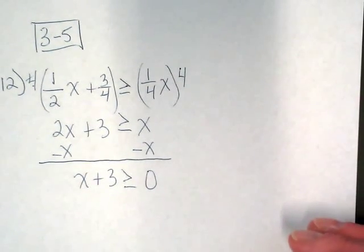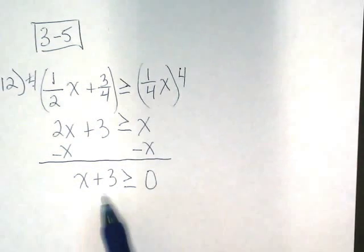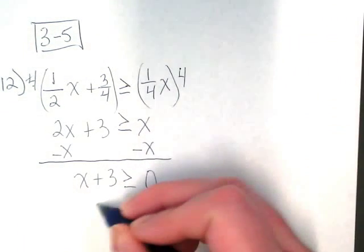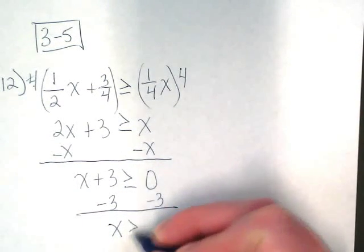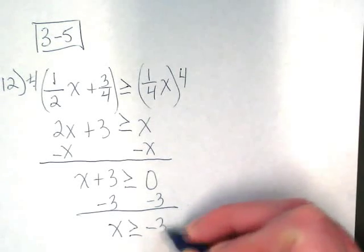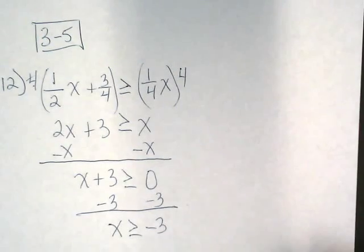The answer is going to be negative 3 because we have to add the opposite to move it to the other side of the inequality. So x is greater than or equal to negative 3.